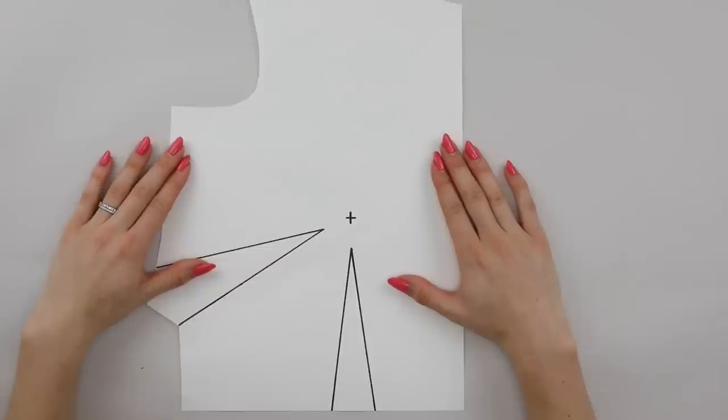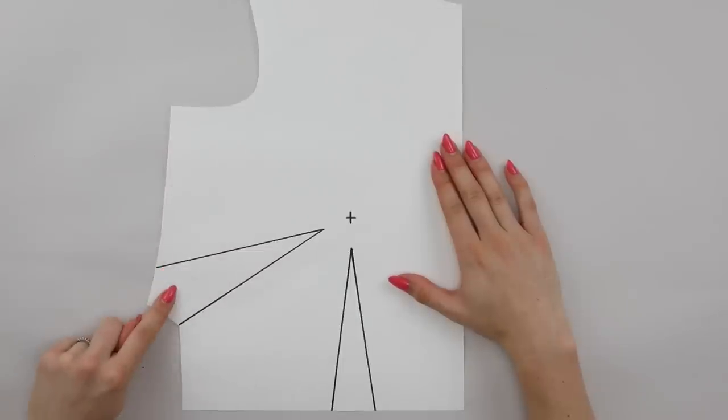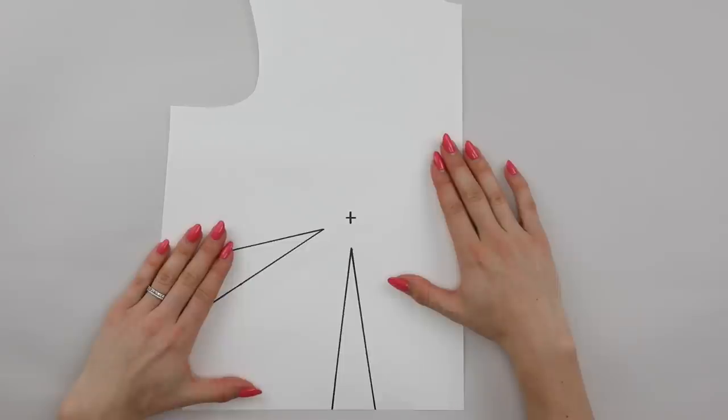So I've drawn out a bodice pattern here for you that has a side dart and a waist dart and a waist seam. Now feel free to draw out a pattern the same because it is good practice to have another go at doing an SBA.